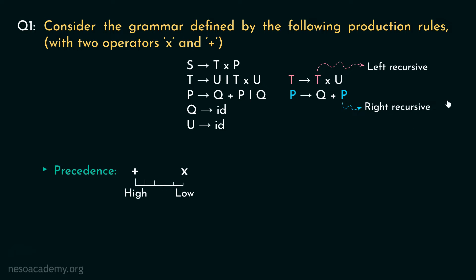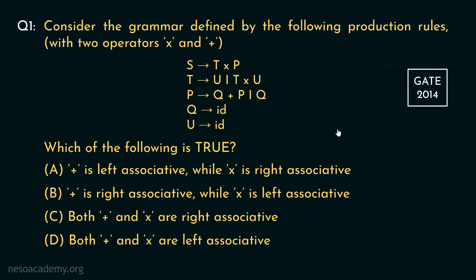Since we have figured out both the associativity and the precedence of the operators into and plus, let's now look at the options. Option A, plus is left associative while into is right associative. Clearly, this is not true. Consider option B, the operator plus is right associative while into is left associative. This one clearly is the correct choice, because that's what we found out earlier, didn't we?